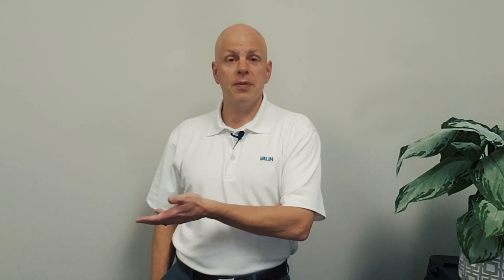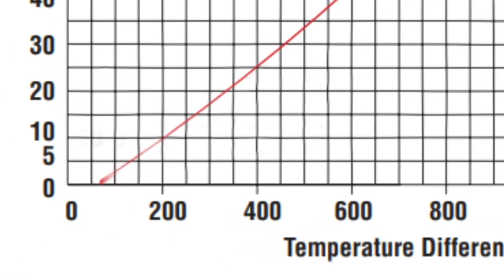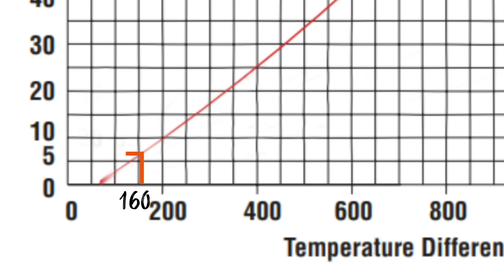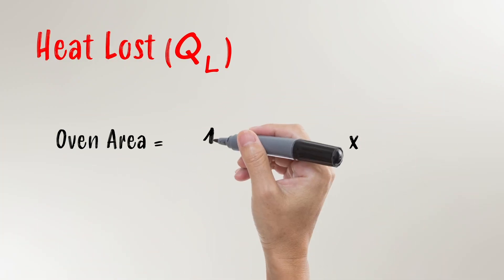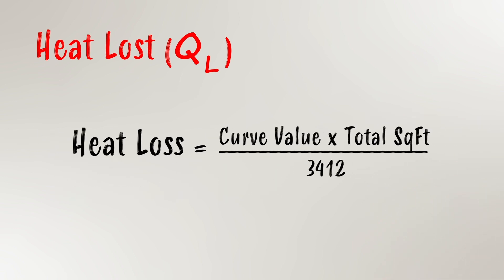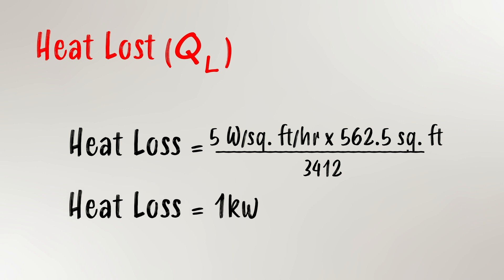Here's the heat loss curve that best fits our application. We can utilize the curve to determine the wattage lost per square foot per hour. In our scenario, due to the two-inch thick insulation and 160-degree difference to the ambient — assuming a 70-degree ambient and 230-degree oven temp — the curve gives us a value of 5 watts per square foot per hour. Next, we calculate the area of the heated container. Because we already have the dimensions, this is fairly easy: length times width times height. Using this formula, we determine the area of the oven is 562.5 square feet. Plugging the values into the heat loss equation, we get a value of about one kilowatt lost to ambient.